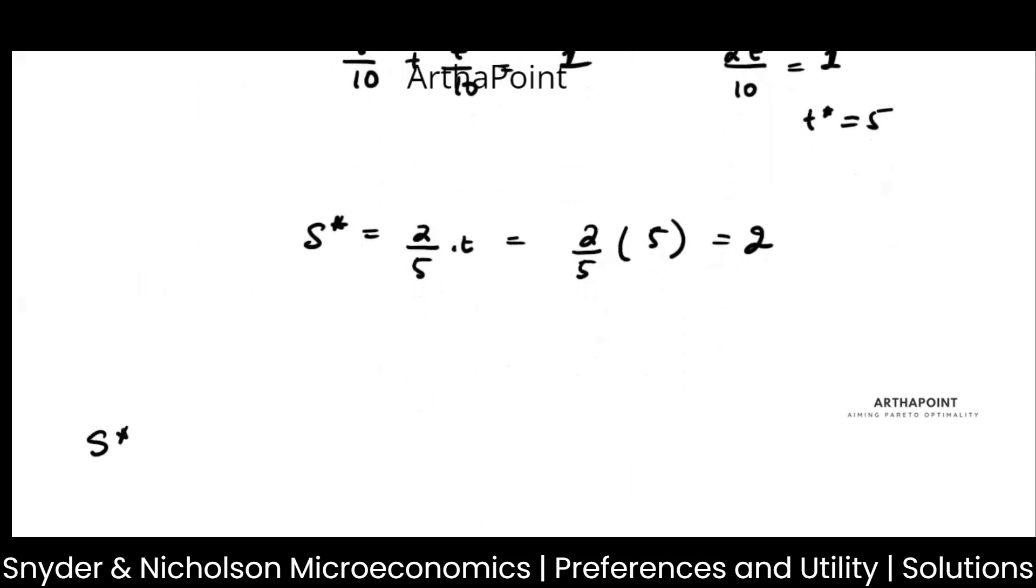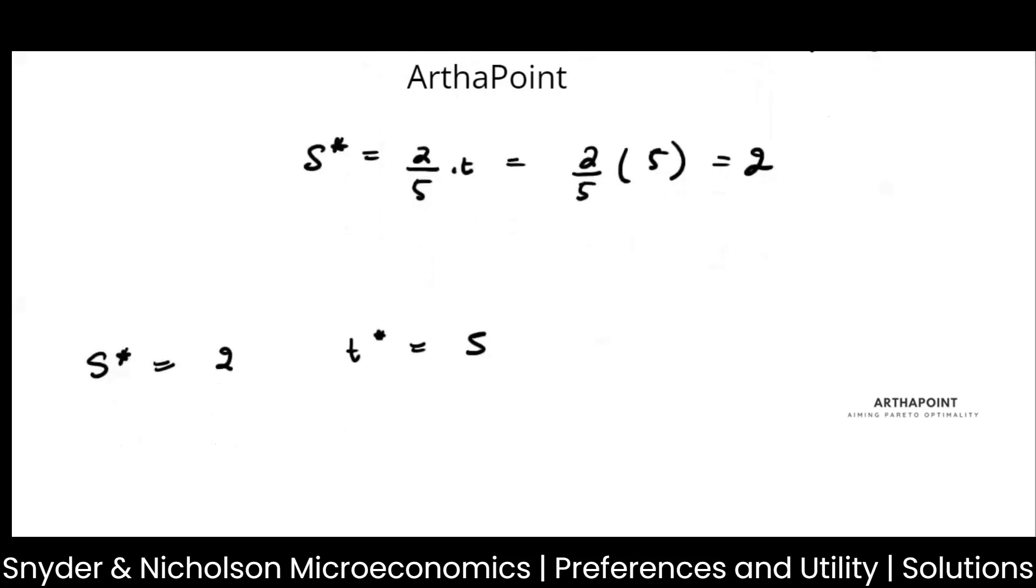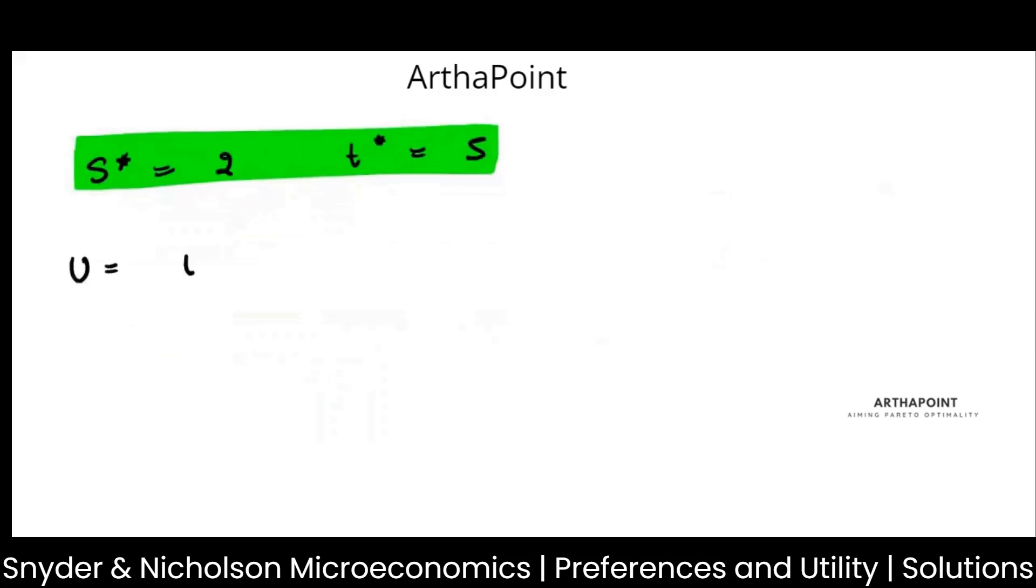There is another way to solve this, as I have already taught you in the class. What can you do? You can simply say that if it is a Cobb-Douglas function, then T star is given by alpha upon alpha plus beta into M by P.